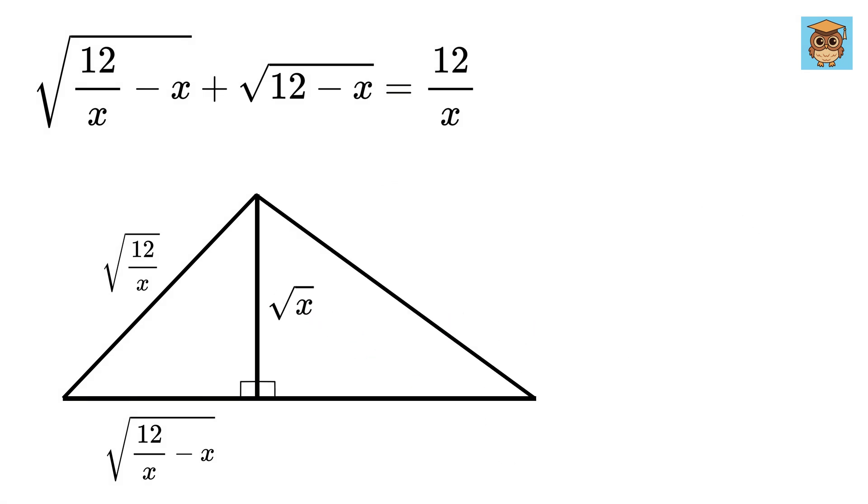Great. Now make another right triangle like this, such that this side of the triangle is root 12 minus x. So, what will be its hypotenuse? Label it as r. So, we have r square equals root x square plus root of 12 minus x square, or x plus 12 minus x, or 12.